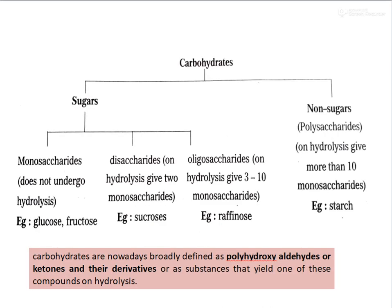Earlier we used to say a carbohydrate is something which is a hydrate of carbon — that is, water (H2O) and carbon (C). But structurally we can see that many of them are not just hydrates of carbon, and now we use a broader definition: they could be either polyhydroxy aldehydes or ketones, or their derivatives, or any substances that yield any one of these compounds on hydrolysis. So carbohydrates will either have aldehyde groups or ketone groups, or they are derivatives.